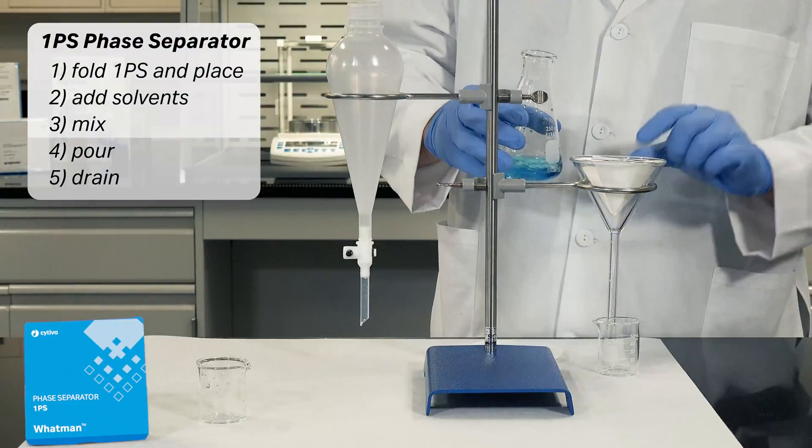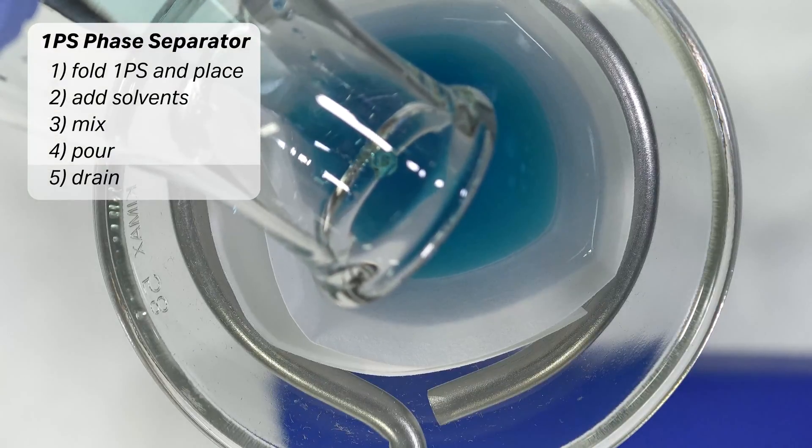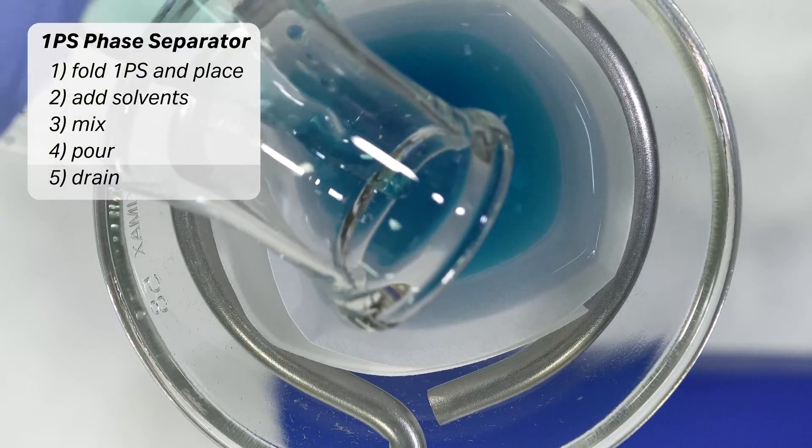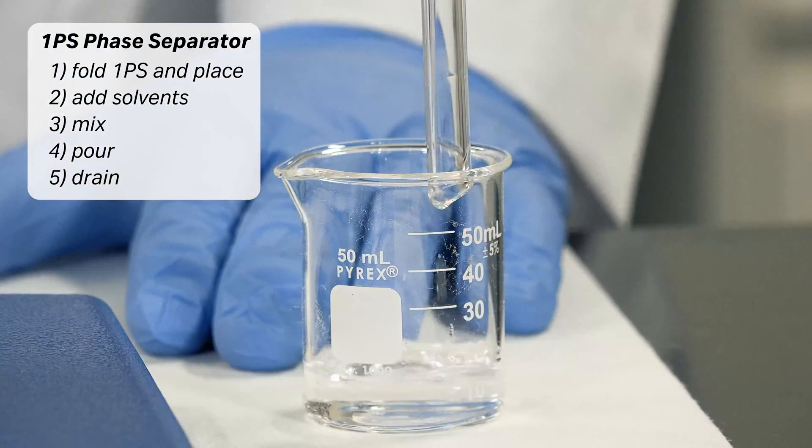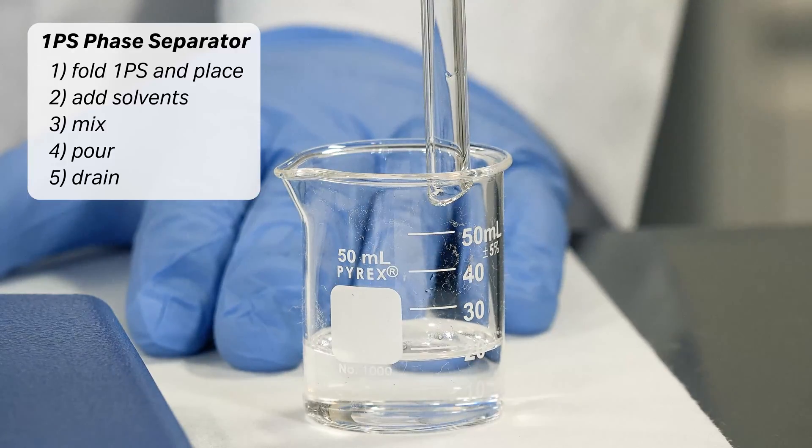Carefully pour the mixture into the glass funnel or filter, ensuring not to overfill. Allow the organic phase to drain from the collection flask. Draining will stop automatically.